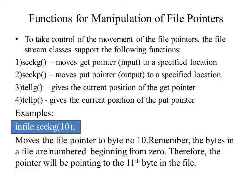seekg moves the get pointer — that is, the input pointer — to a particular location specified in its brackets. Similarly, seekp moves the put pointer to a particular location. tellg gives us the current position of the get pointer in the file, and tellp tells us where the put pointer is currently located. For example, in_file.seekg(10) means the get pointer will move to the 10th byte of the file. Since bytes start from 0, reaching the 10th location means it is actually the 11th byte in the file.